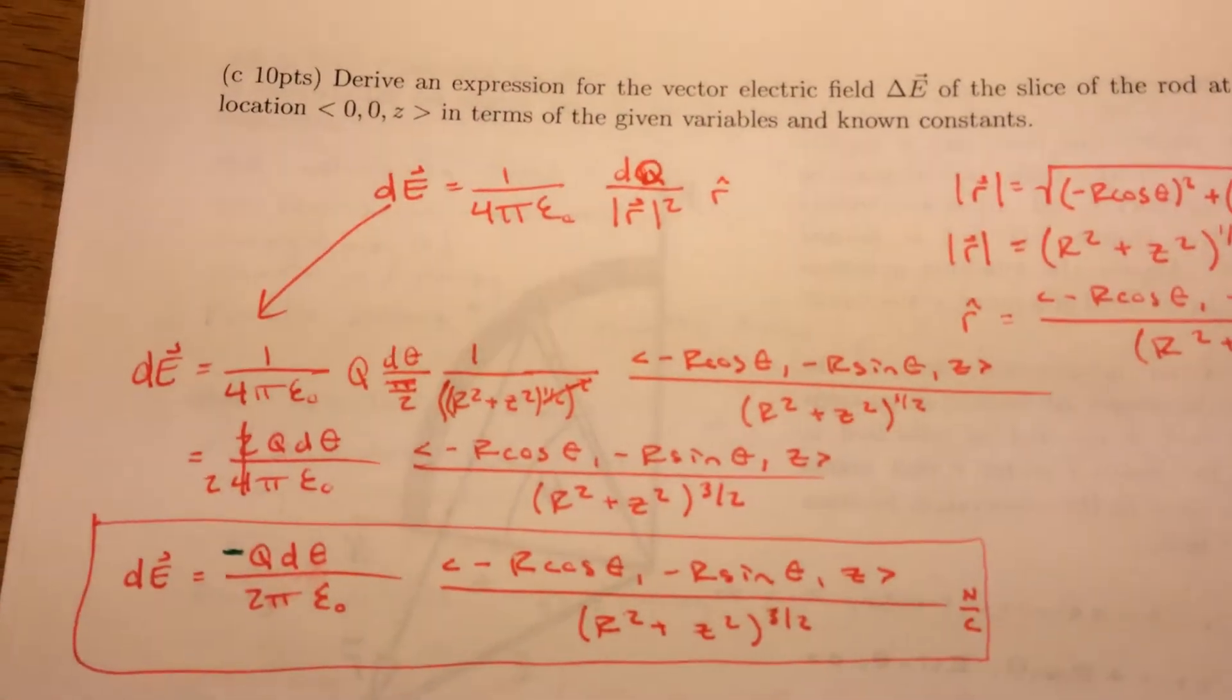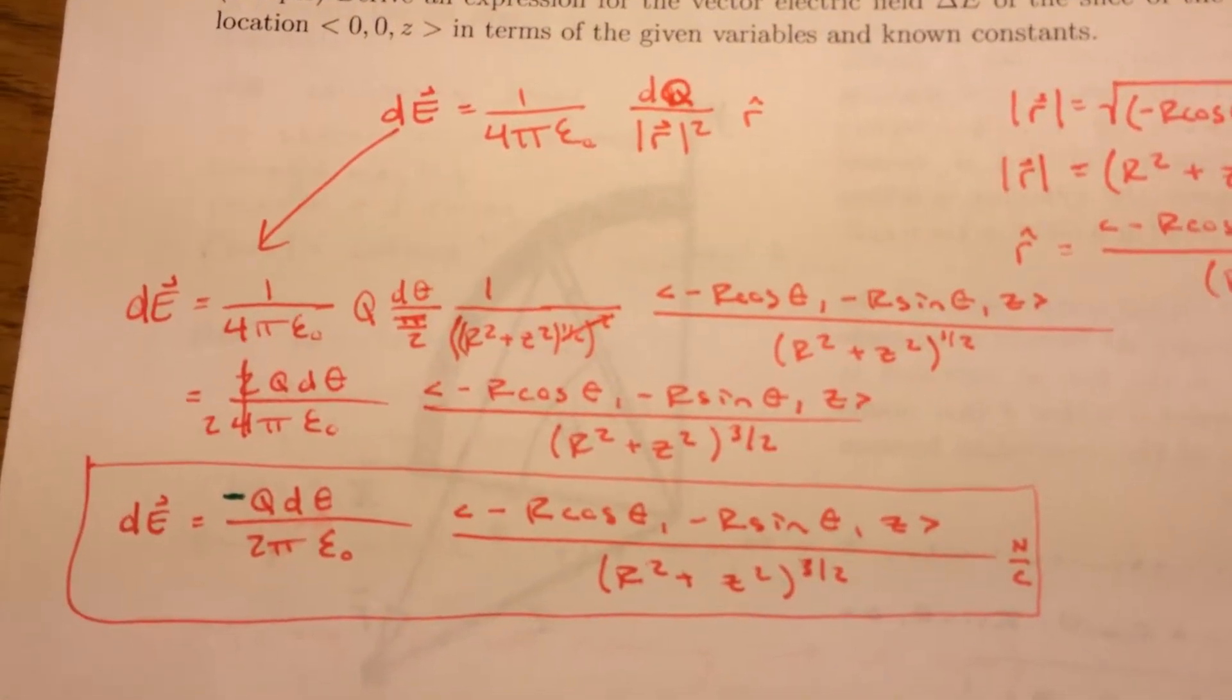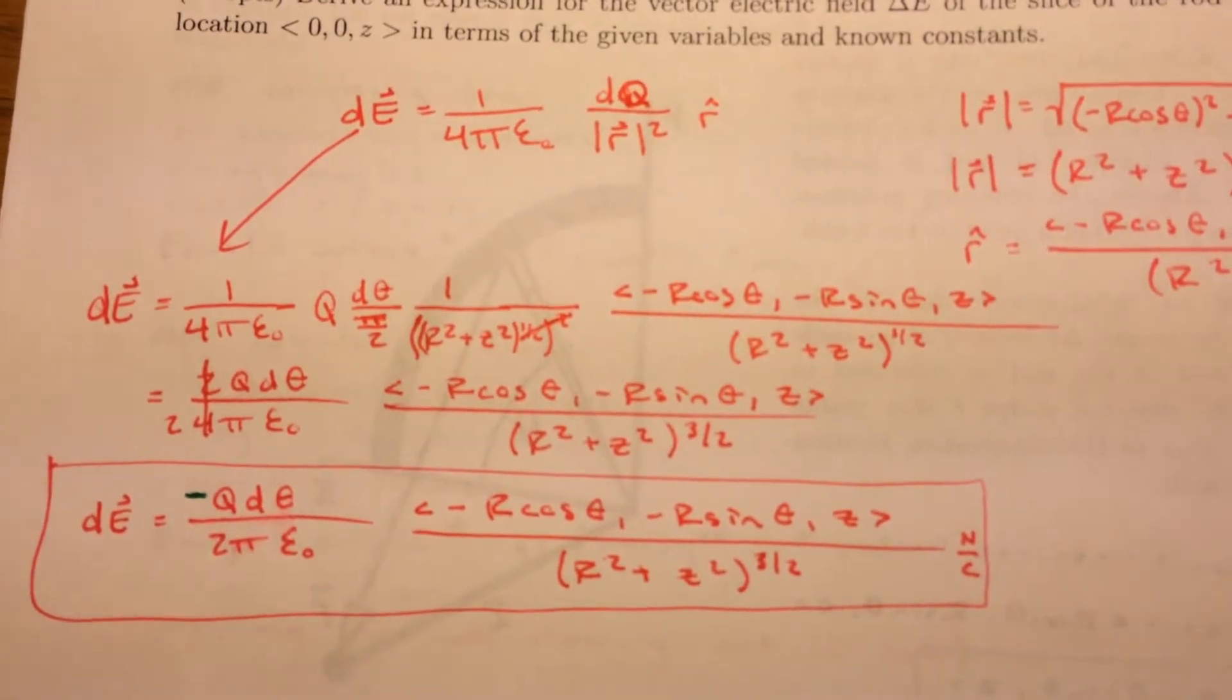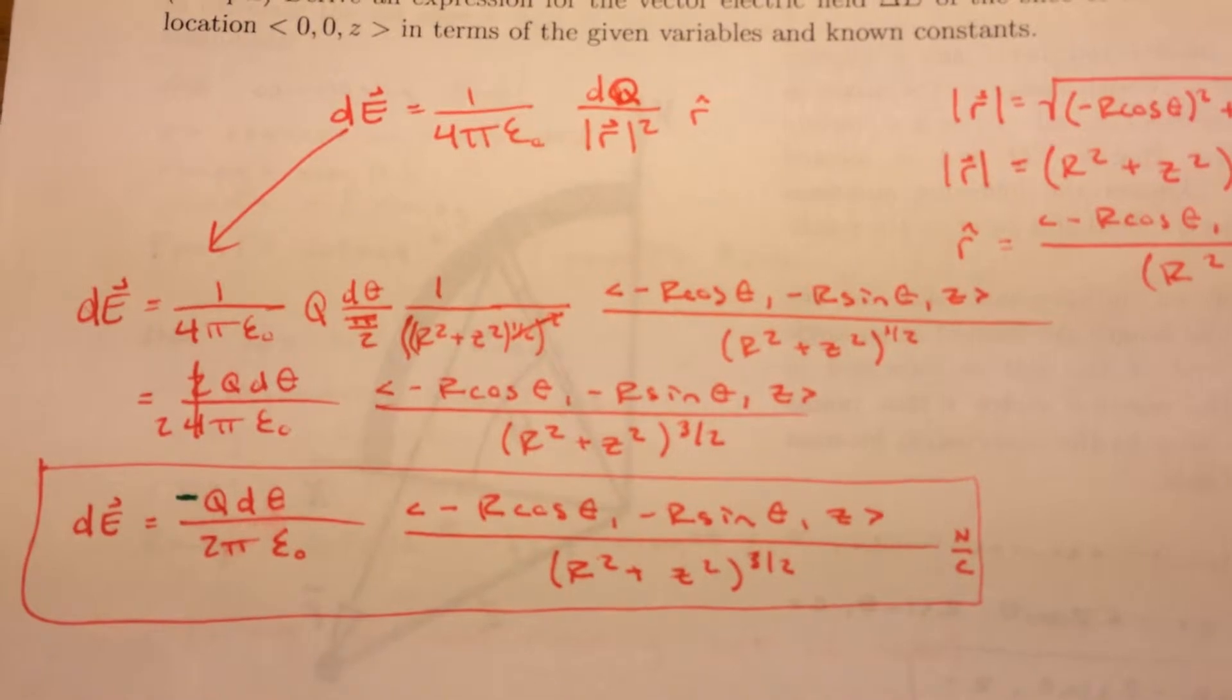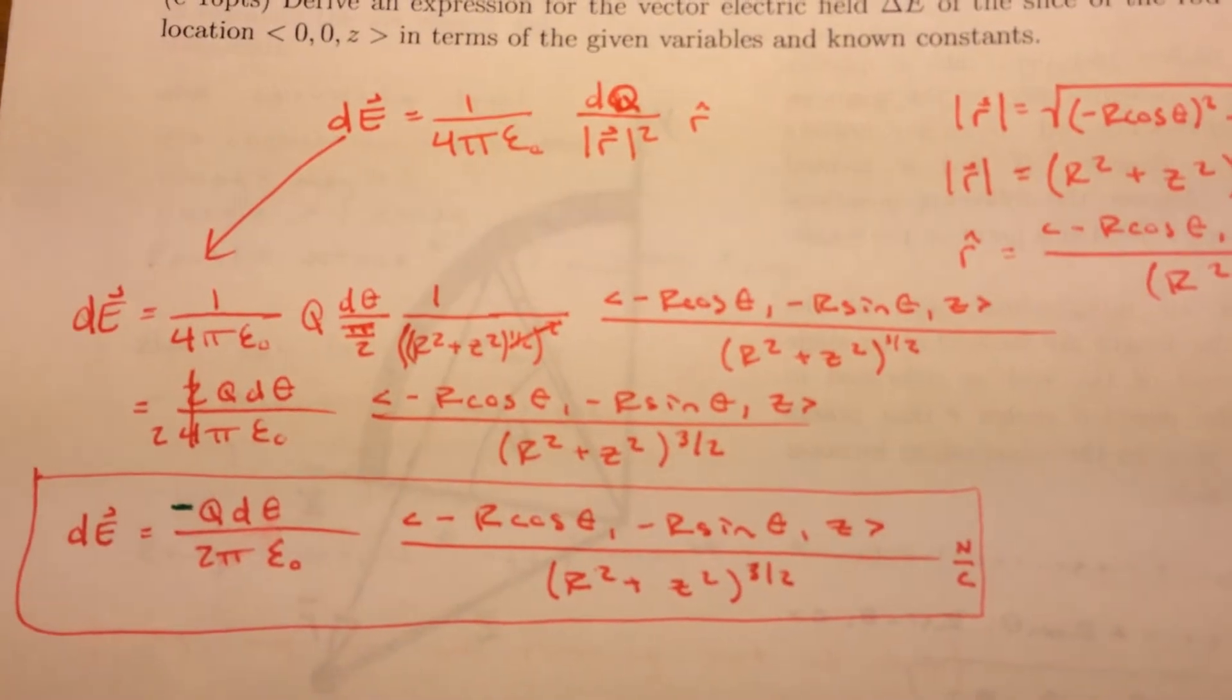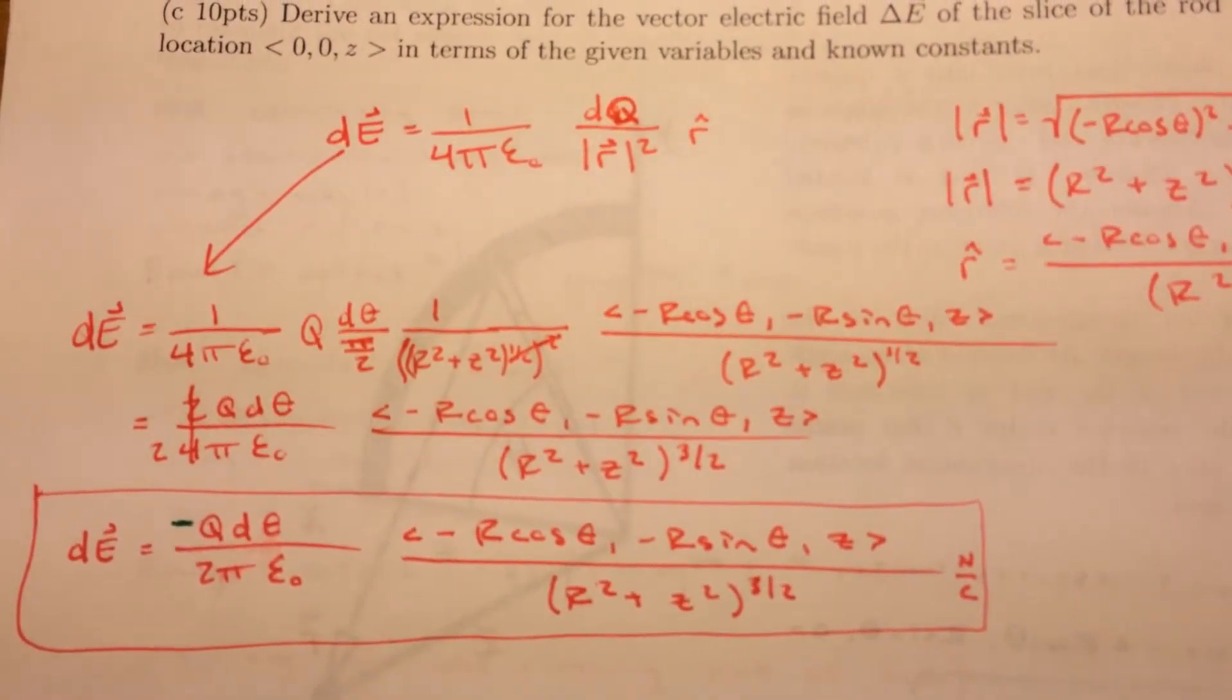Now we're going to expand this function. We're going to say dE, which is the electric field at this specific part of the arc, is equal to 1 over 4 pi epsilon naught times the whole charge times this little slice of the arc over pi over 2, which is the whole arc length. And then we're going to put in there r hat.